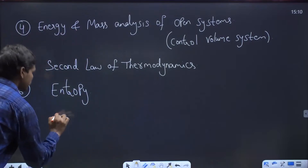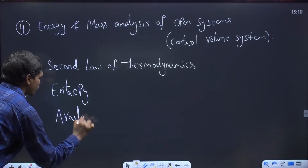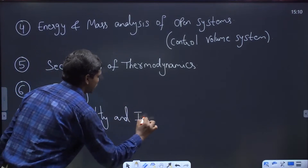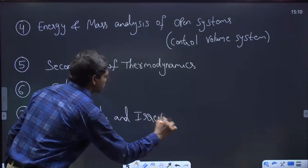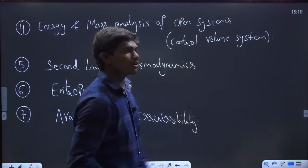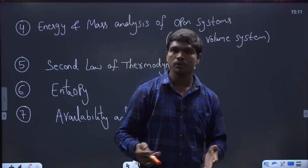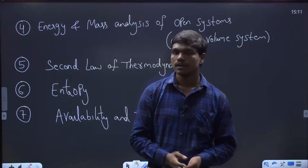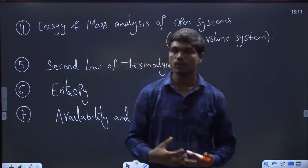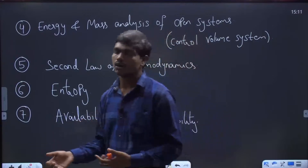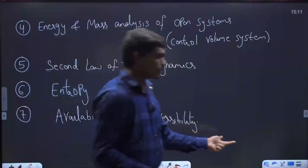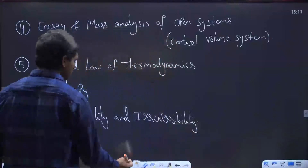In the seventh chapter we deal with availability and irreversibility. This is a really important chapter — in summer you may experience more power cuts than in winter because even though the same energy input is given, the output decreases. We'll see why this happens in the chapter on availability and irreversibility, and learn the basic definitions of availability and irreversibility.